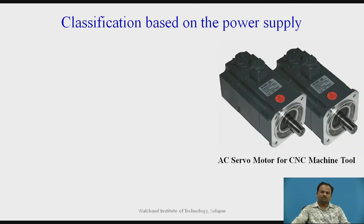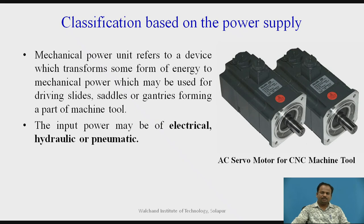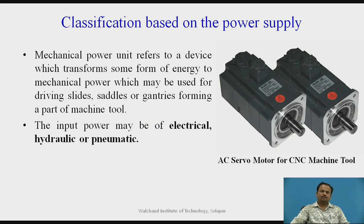Classification based on the power supply: a mechanical power unit refers to a device which transforms some form of energy into mechanical power, which may be used for driving slides, saddles or gantries forming a part of a machine tool. The input power may be electrical, hydraulic or pneumatic. Sometimes electrical power is directly used in the CNC machine, and sometimes if more torque or force is required, hydraulic and pneumatic systems may be used. In this figure you can see the servo motor for a CNC machine tool. These servo motors are used to drive the tools to the required positions in CNC machines.